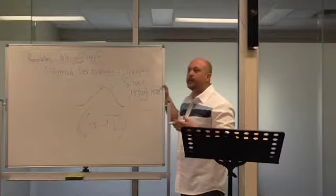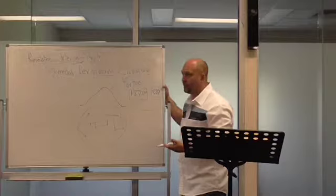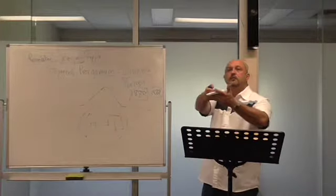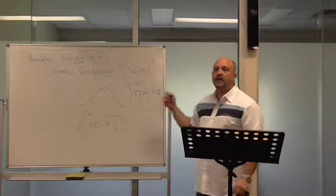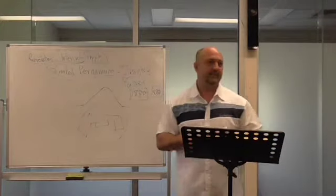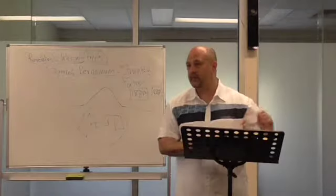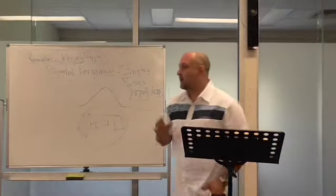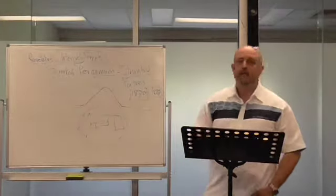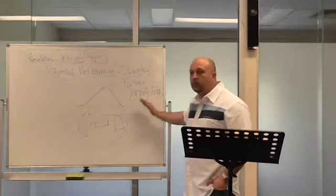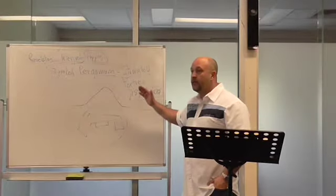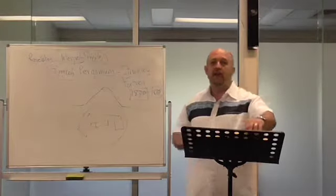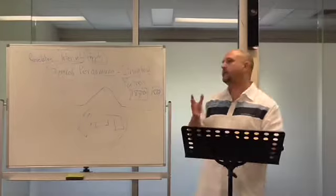Before that, Germany was part of Prussia. Prussia was an ancient empire. Now Germany separates from Prussia and it becomes its own empire. And that's the year Adolf Hitler gets born. Adolf Hitler gets born that year. And then they start to rebuild the temple of Zeus in Berlin. And they put it all together and they finish it around 1911, 1912.